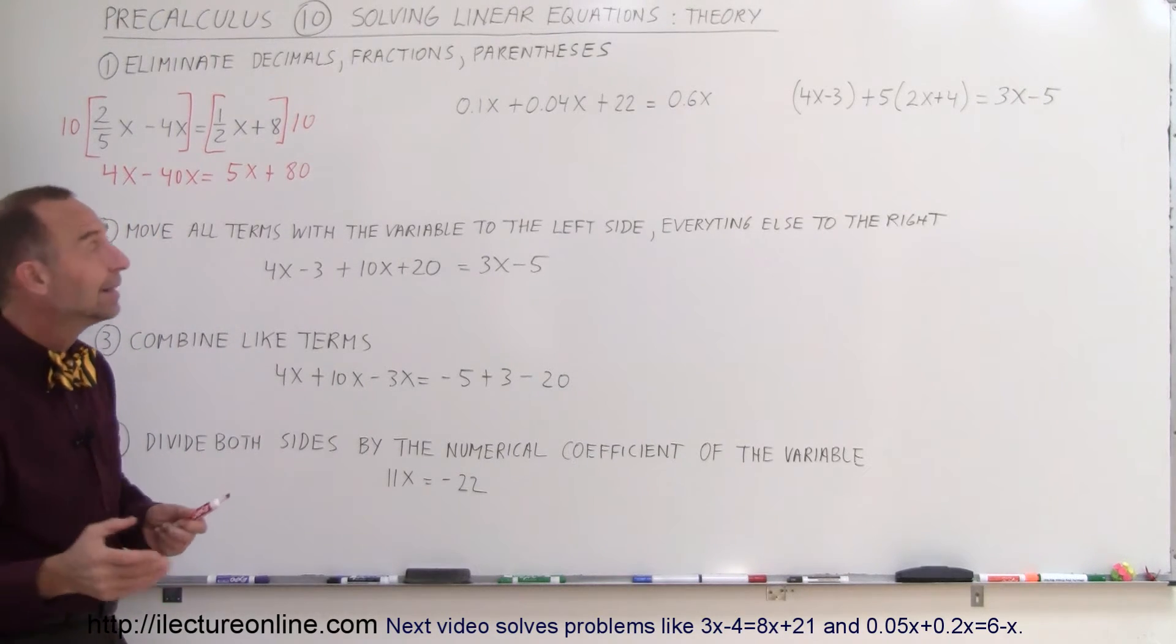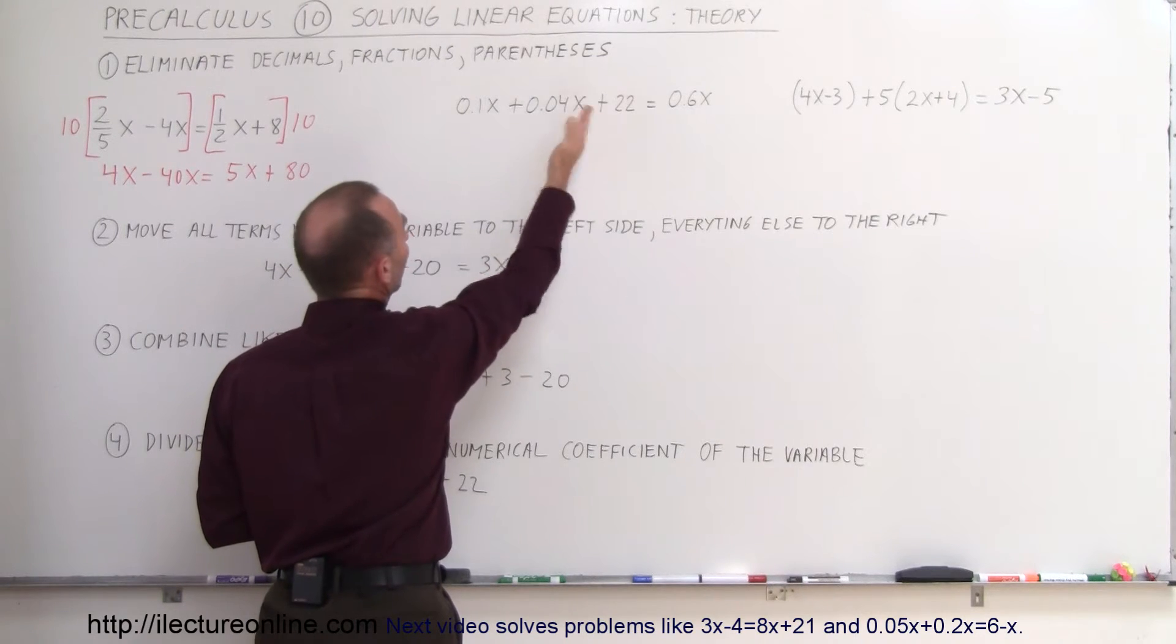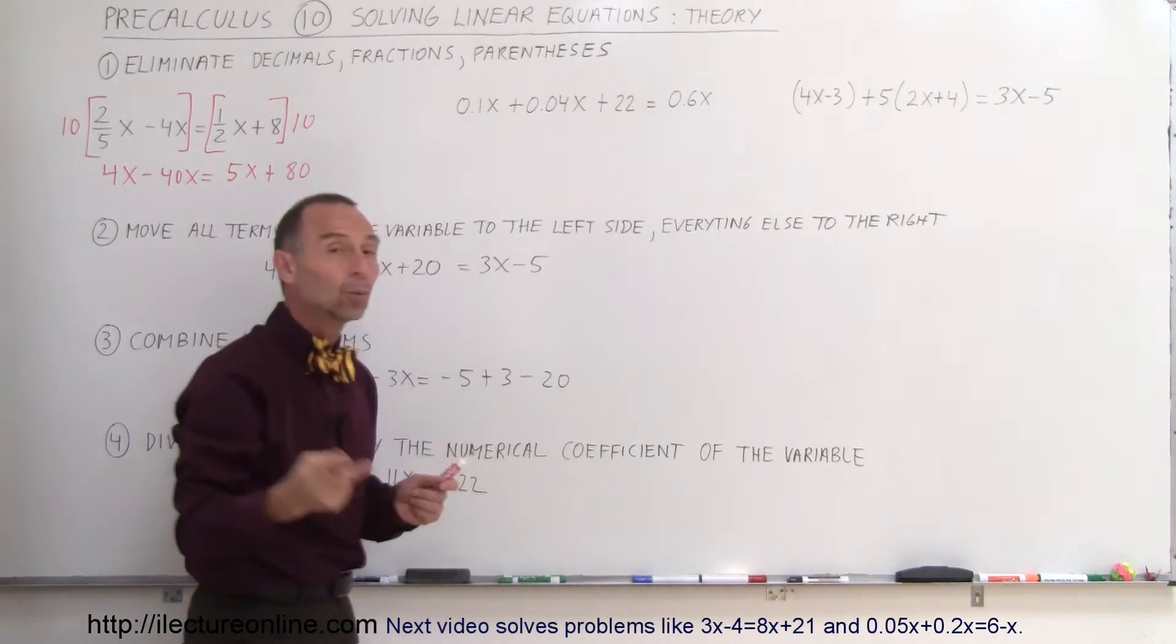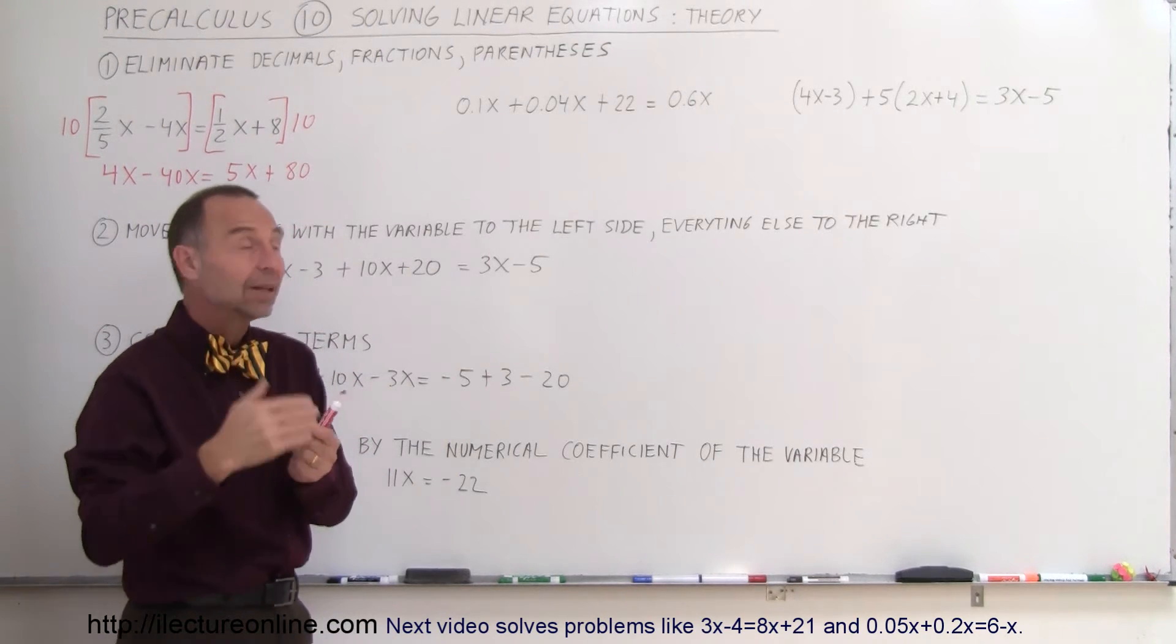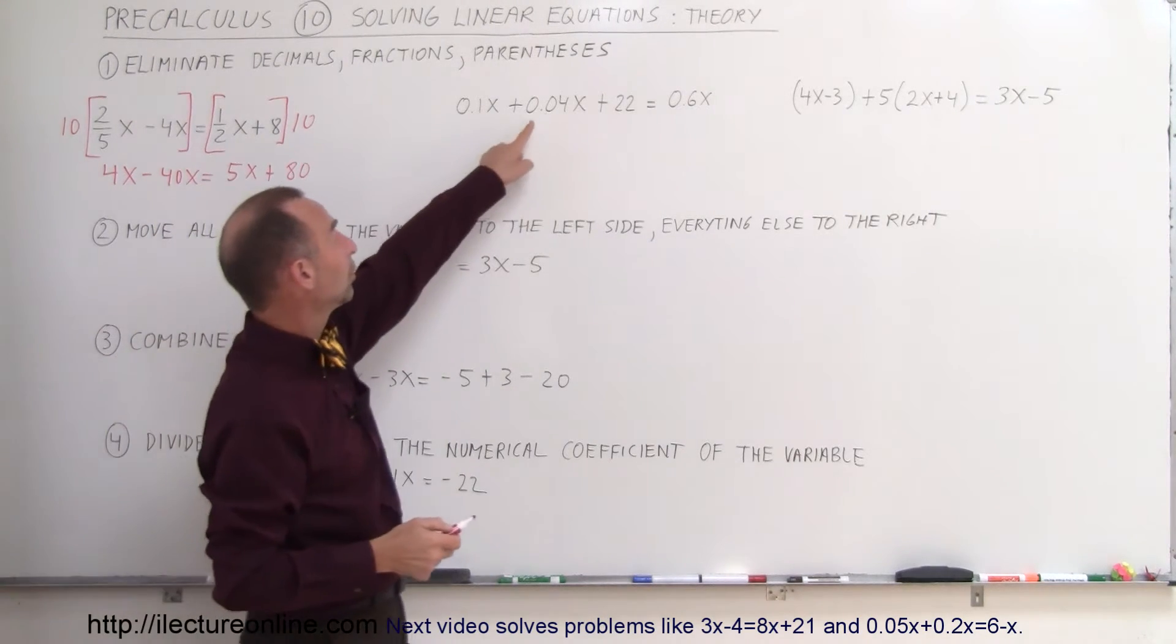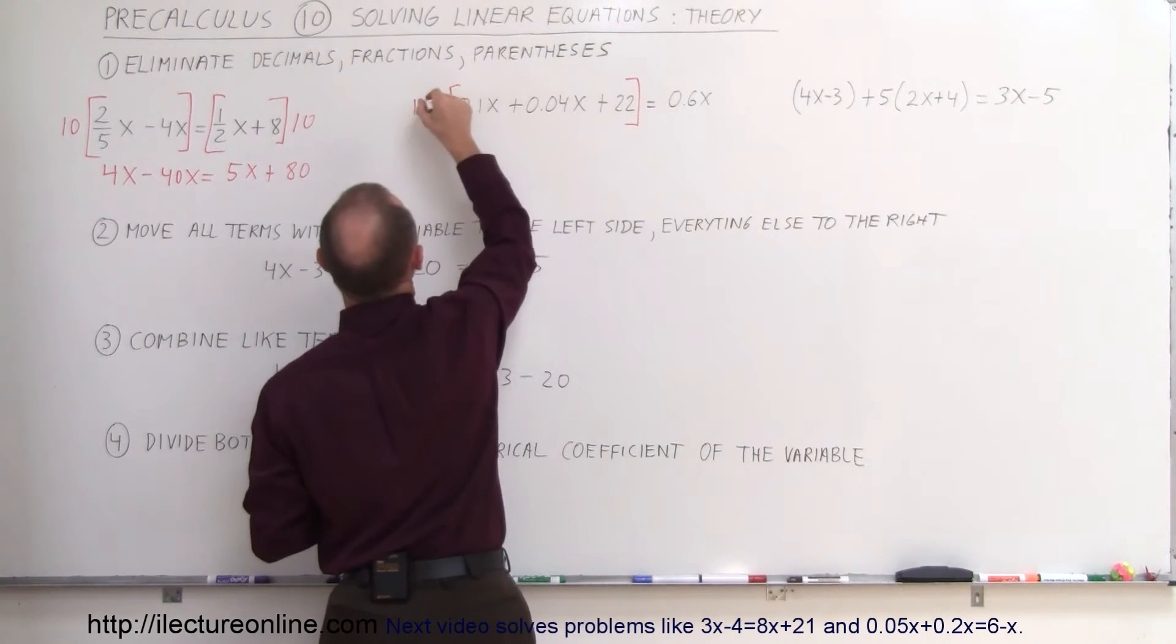With decimals, you want to find the one that has the greatest number of decimal places, in this case 2. So you want to multiply both sides by 1 with then 2 zeros. So however many decimal places you have, it's a 1 with that many zeros. In this case, a 1 with 2 zeros, so multiply both sides of the equation by 100.